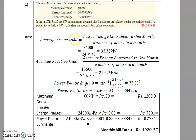First, it is necessary to calculate the power factor. We calculate the average active load: active energy consumed in one month divided by number of hours in a month — 2400 kWh divided by 24 hours into 30 days — which gives 33.33 kW. Similarly, average reactive load is 15600 divided by 24 into 30, giving 21.67 kVAr.